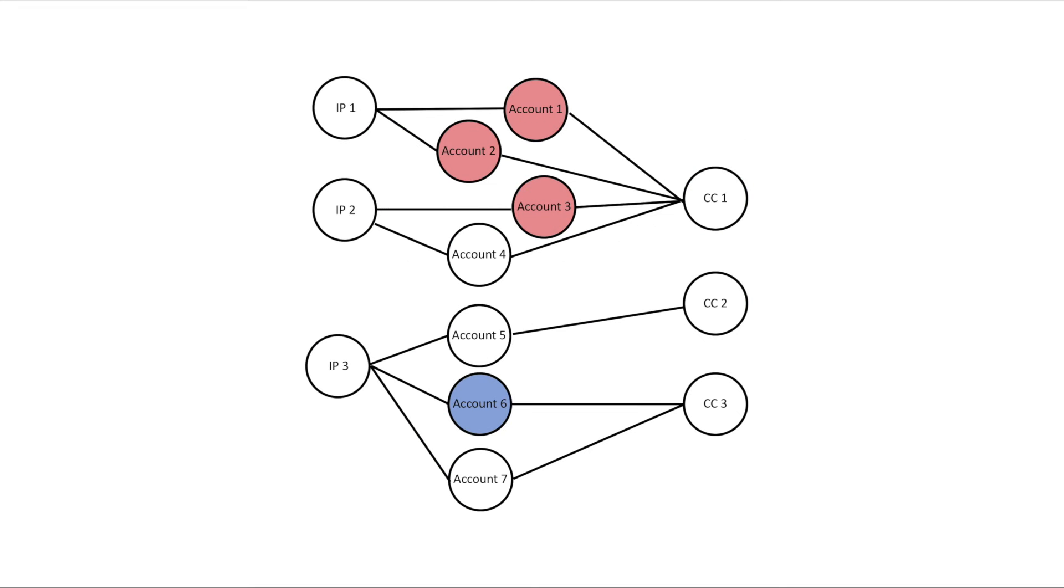Here's a little schematic showing how this works conceptually in a graph that connects accounts with their shared attributes, like IP address and credit card numbers. In label propagation, each node in the graph starts with an initial state, and that state is updated by receiving messages from the other nodes that it's connected to.